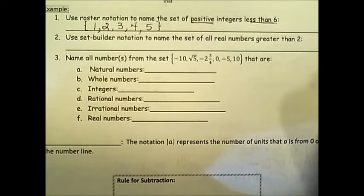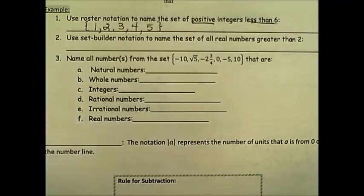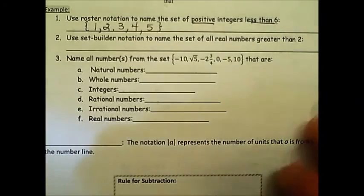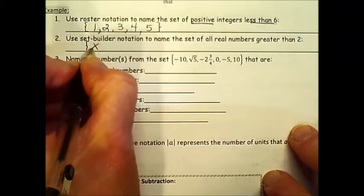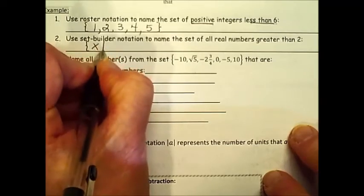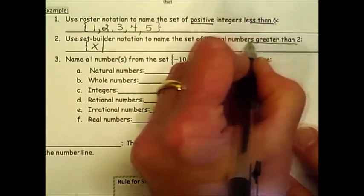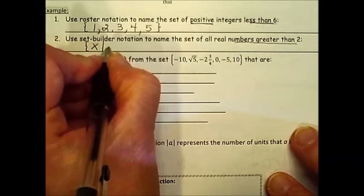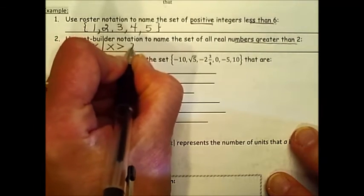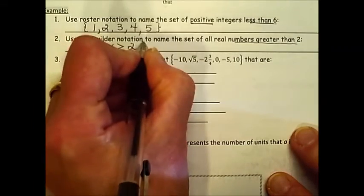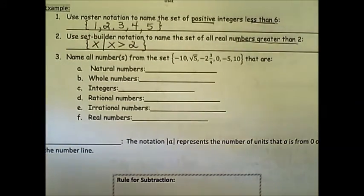That's our representation of this description in roster notation. In number 2, it asks us to use set builder notation to name the set of all real numbers greater than 2. And to show all the numbers greater than 2, we'll start with our bracket, the set of all x such that. And to represent greater than 2, we could write that out, or I can use the inequality with the greater than sign to represent the value or set of numbers that we're describing here.